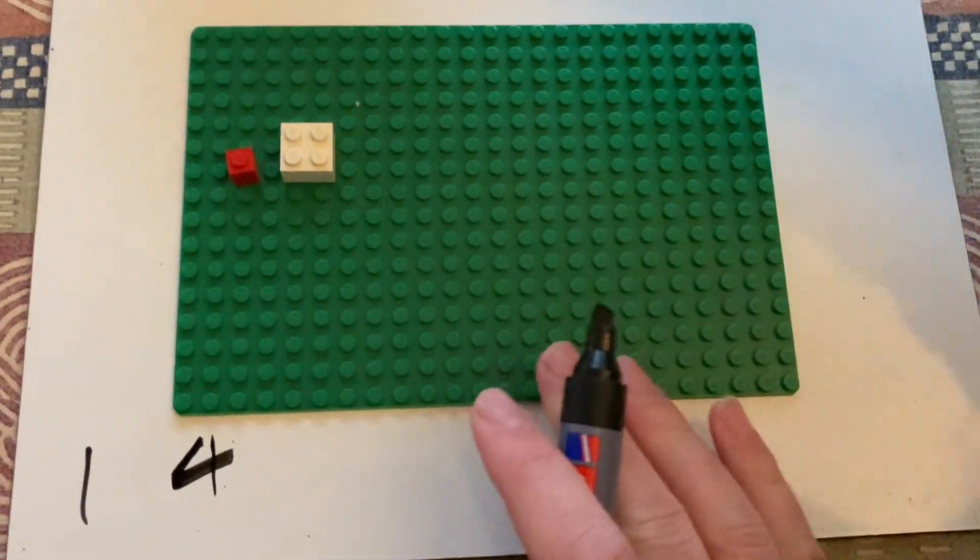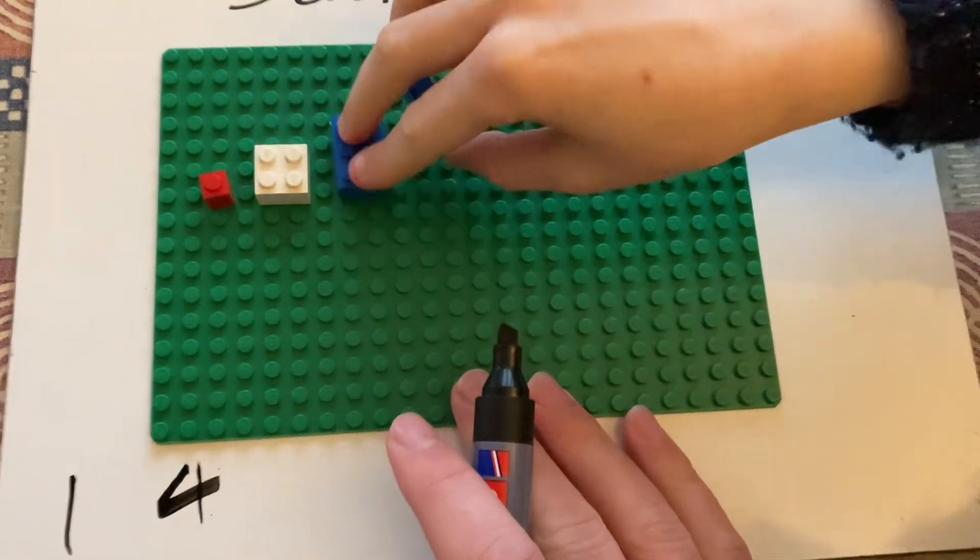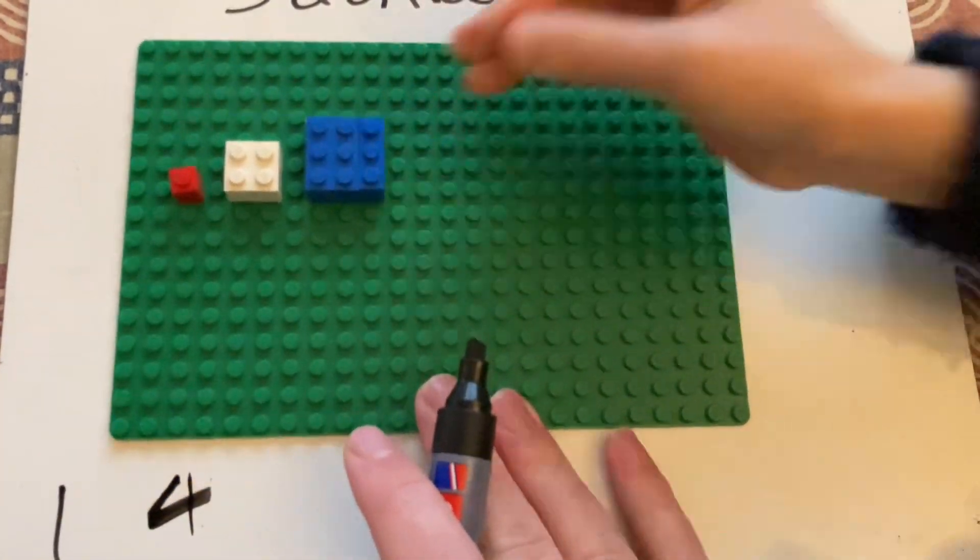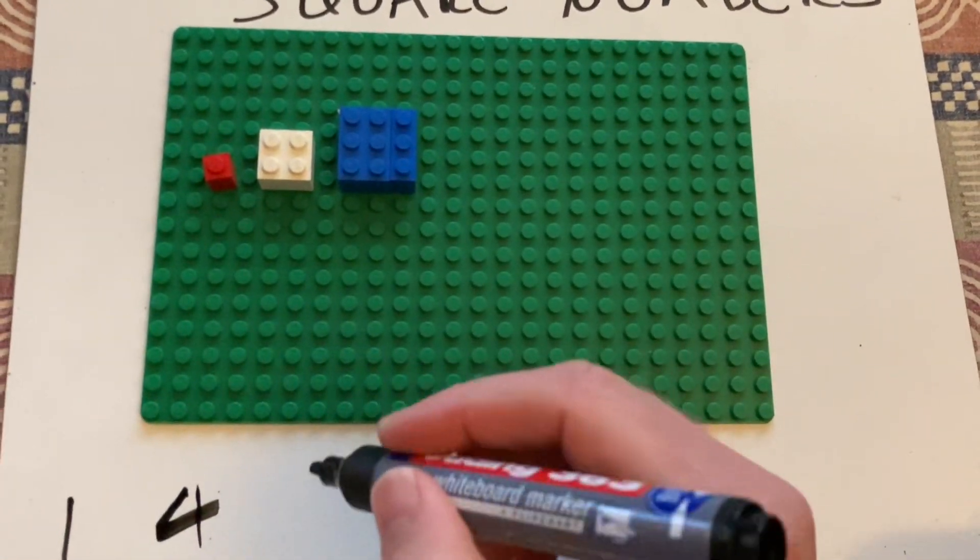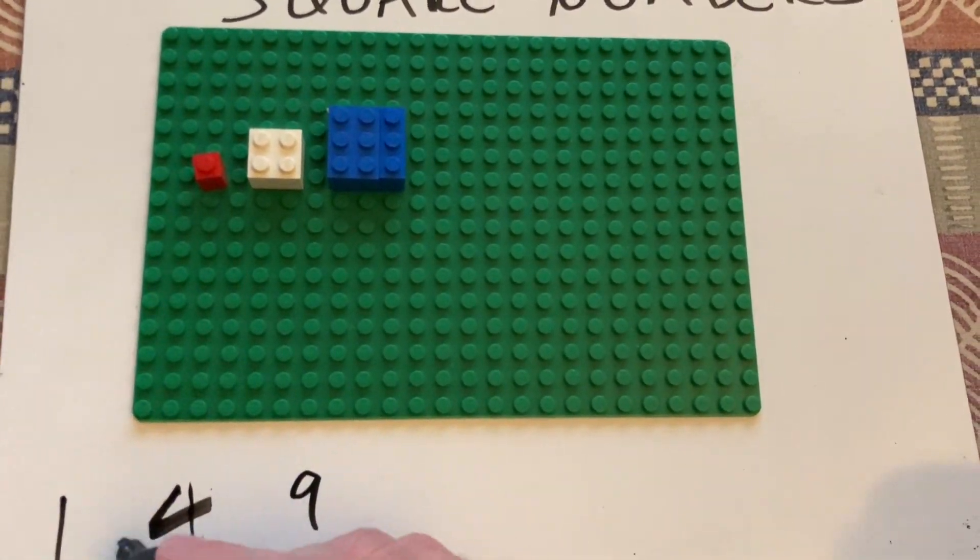The next square number then? Three times three, which is nine. You've got three by three, making a nice square of nine.